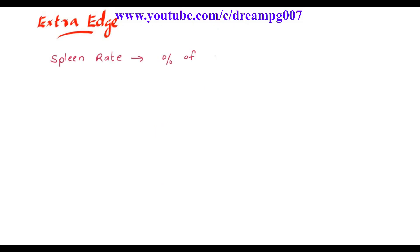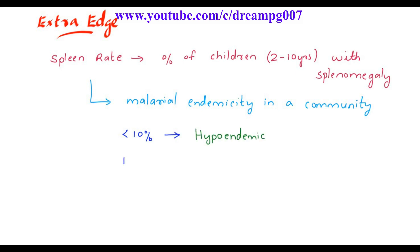Spleen rate is the percentage of children belonging to the age group of two to ten years with splenomegaly during the times of malaria. It helps to represent the malaria endemicity in a community. If the spleen rate is less than ten percentage, that area is hypo-endemic. If it is eleven to fifty percentage, then that area is meso-endemic. If it is fifty-one to seventy-five percentage, that area is hyper-endemic. And spleen rate is greater than seventy-five percentage, that area is holo-endemic.